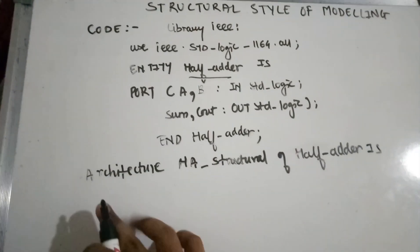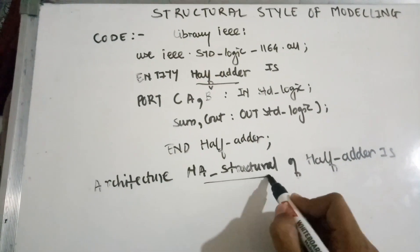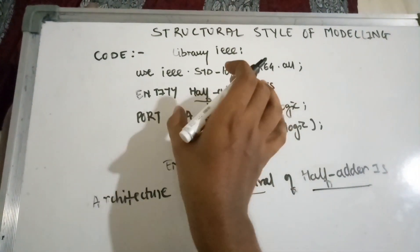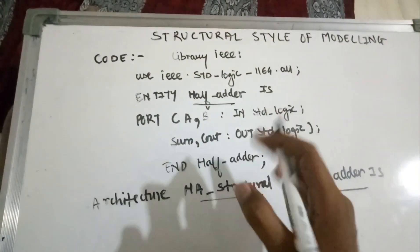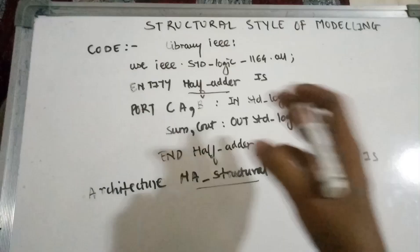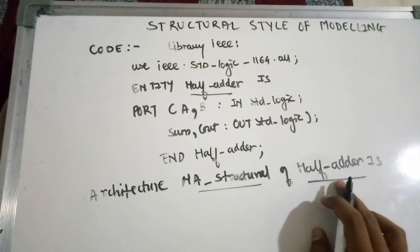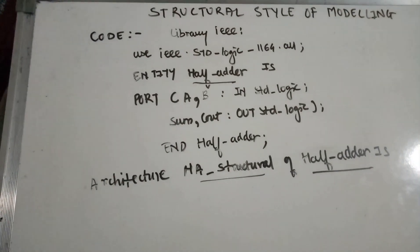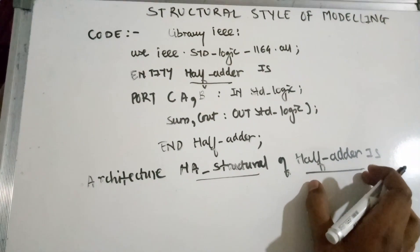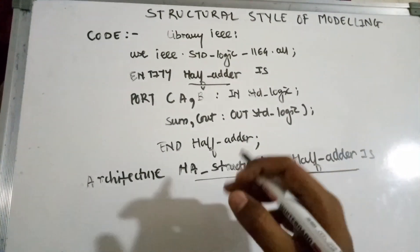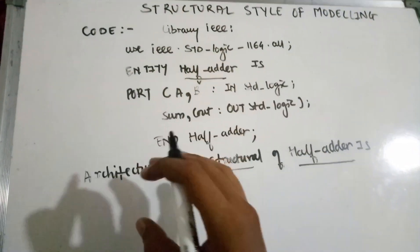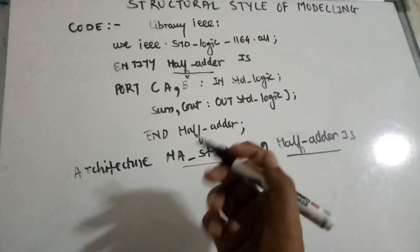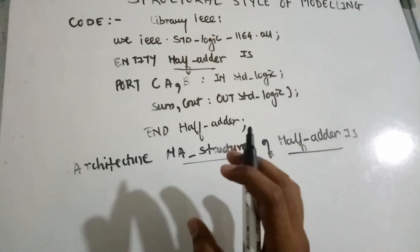Here is your architecture declaration, where you provide the entity name. In another case, if you write it for a full adder, you would write full_adder instead. In structural style of modeling you must declare components, and there is a specific syntax for component declaration.